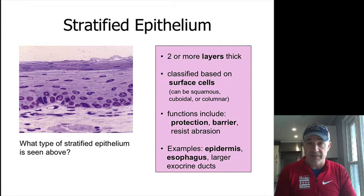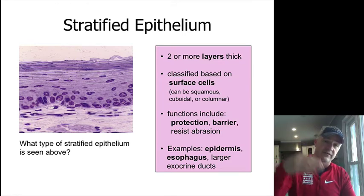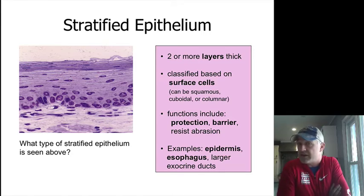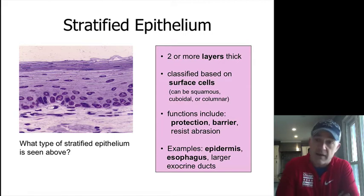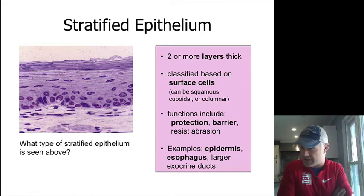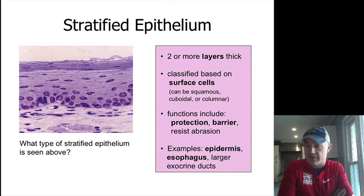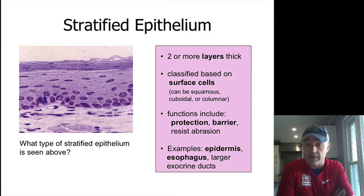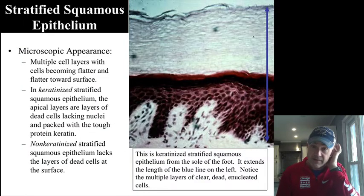Stratified epithelium is two or more layers thick, named based on the apical surface cells. The image on the left would be stratified squamous. A lot of these are going to be more protective. Stratified squamous is probably the most common stratified type of epithelium, and we see it in many areas of the body.